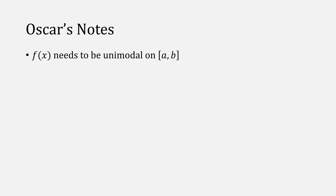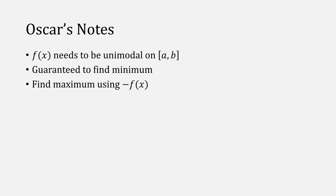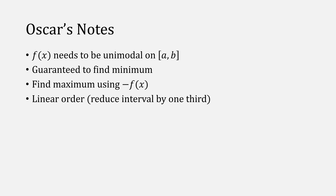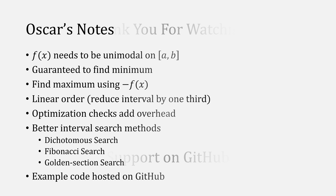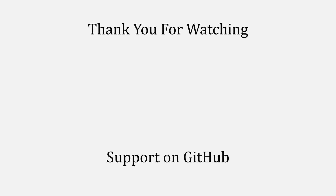Some key points about ternary search: it requires a unimodal function on some interval a and b. It is guaranteed to find the minimum, and to find a maximum you simply negate f. It reduces the search space by one-third every iteration, giving you linear order. Optimization checks do add some overhead. There are actually better interval search techniques, such as dichotomy search, Fibonacci search, or golden section search, but those are topics for other videos. The code used will be hosted on GitHub. That's all for this video — if I piqued your interest in minimization, definitely check out the playlist with other minimization videos. Thank you for watching.